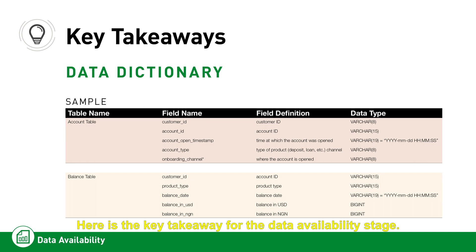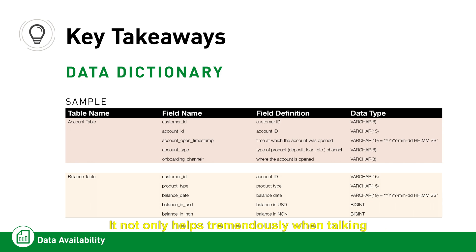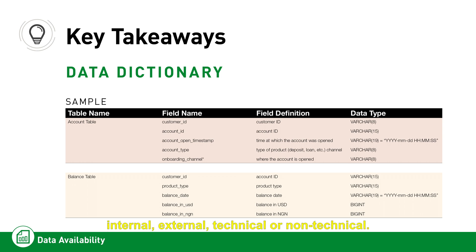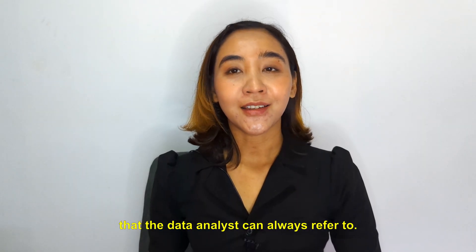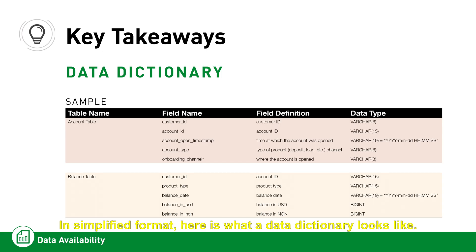Here is the key takeaway for the data availability stage: it is best practice to maintain a data dictionary. Not only does it help tremendously when talking to anyone who needs to use the data — internal, external, technical, or non-technical — it will also serve as a live document that the data analyst can always refer to. In simplified format, here is what a data dictionary looks like.